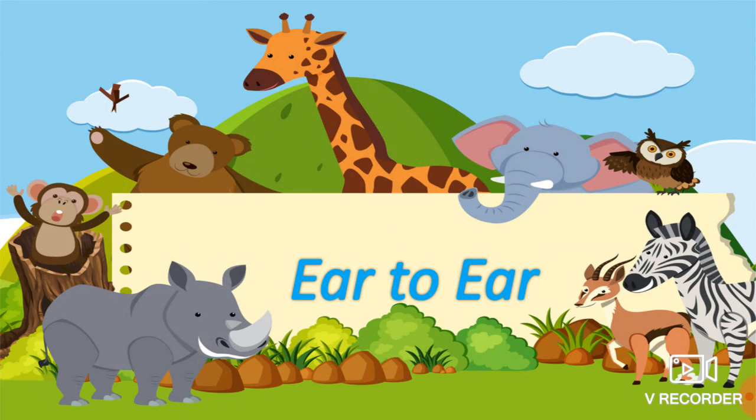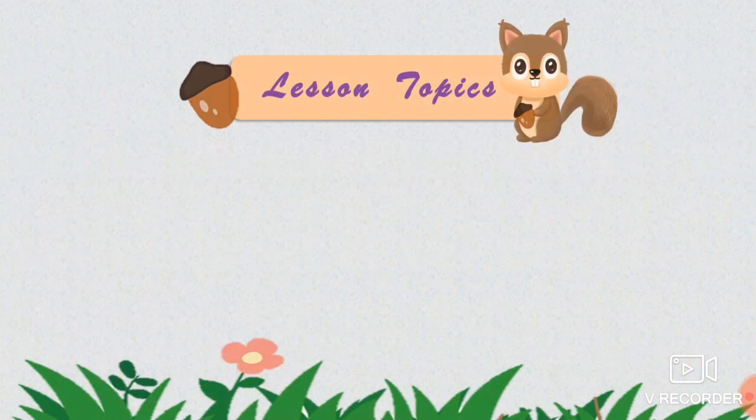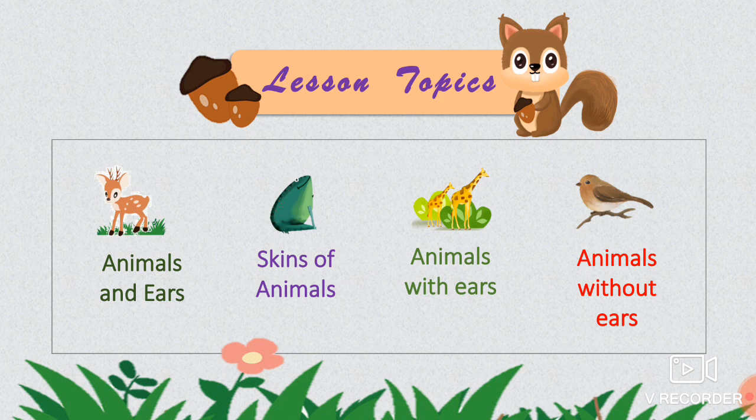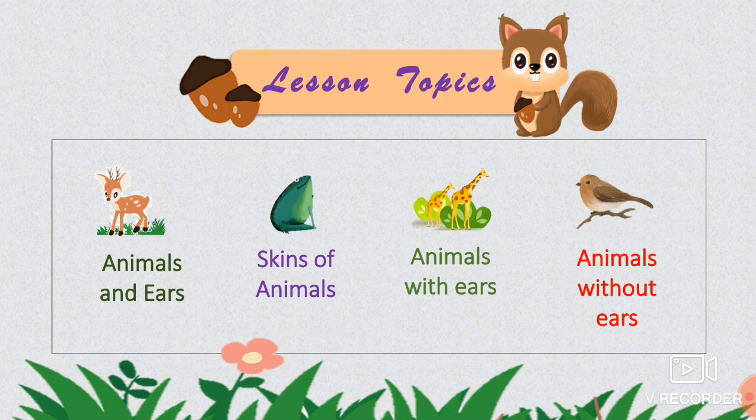I am going to teach you today the lesson called 'Animals and Ears.' This lesson comprises four topics: the first topic is Animals and Ears, the second topic is Skins of Animals, the third topic is Animals with Ears, and the last one is Animals without Ears. Today I am going to teach you only the first concept — Animals and Ears.